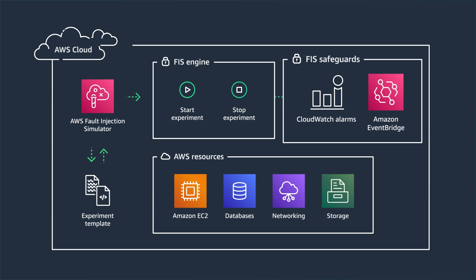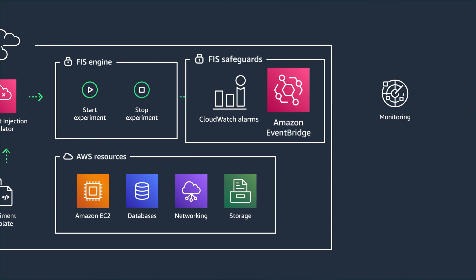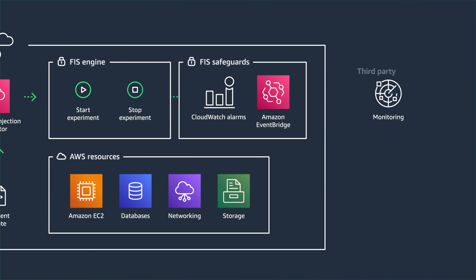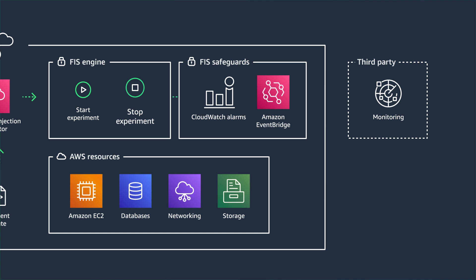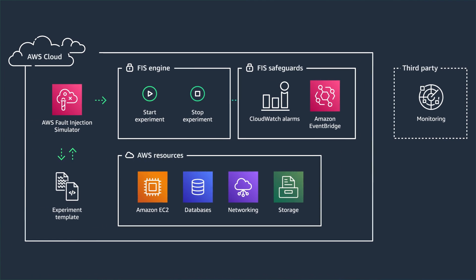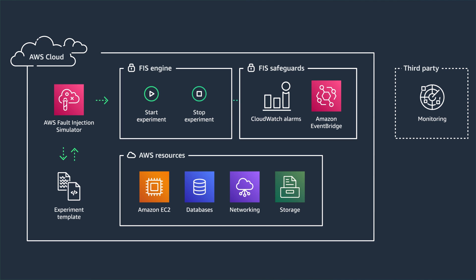You can monitor the experiment using AWS CloudWatch, and FIS can also be integrated with Amazon EventBridge, which allows you to integrate with your existing monitoring tools. Experiments, once started, automatically stop when all the actions are complete, or you can optionally configure them to stop when an alarm or event is triggered. Once the experiment is complete, you can view the results to identify any performance, observability, or resilience issues. You can use AWS FIS in periodic game day events by creating potential failure conditions and observing how effectively the team and systems respond. You can also integrate FIS into your continuous delivery pipeline, enabling you to repeatedly test the impact of fault actions as part of your software delivery process.